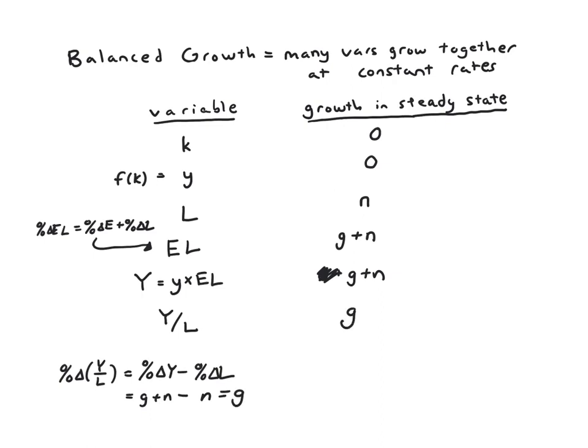So if we calibrate g in this model to be 2 or 3 percent, then we can make output per worker grow at 2 or 3 percent. And that's what actually happens in practice. So we can make the Solow model much better fit the data by using a g of 0.02 or 0.03.